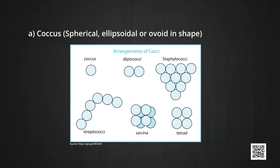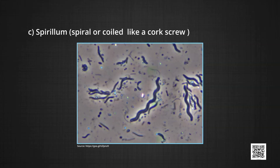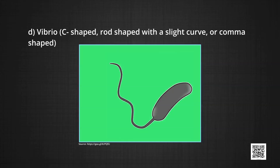The four shape-based categories of bacteria are: first, coccus — spherical, ellipsoidal or ovoid shape; second, bacillus — straight, rod-shaped or cylindrical; third, spirillum — spiral or coiled like a corkscrew; and fourth, vibrio — C-shaped, rod-shaped with a slight curve, or comma-shaped.